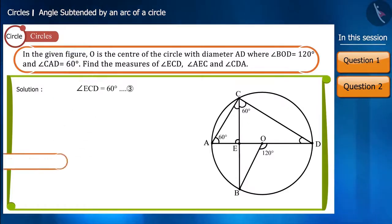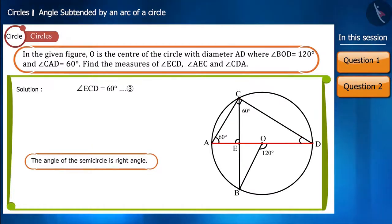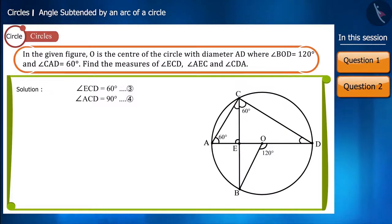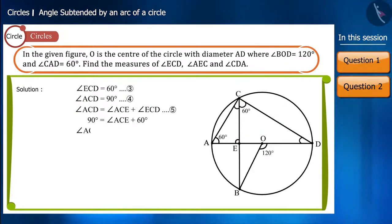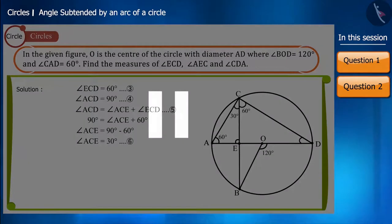We know that the angle in a semicircle is a right angle. You can see in the figure that angle ACD is the angle subtended at point C by diameter AD, so angle ACD measures 90 degrees. We now know both angle ACD and angle ECD. By placing their values into the equation, we can determine angle ACE, which equals 30 degrees.